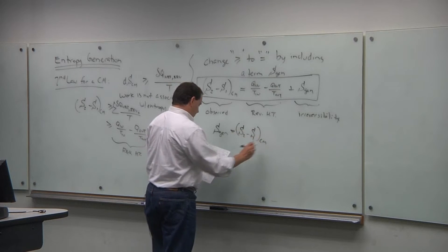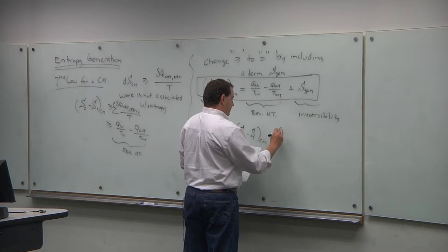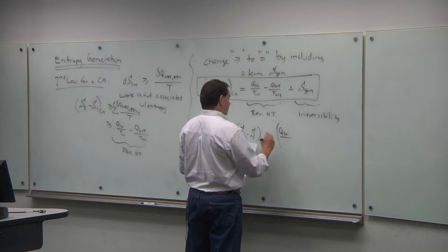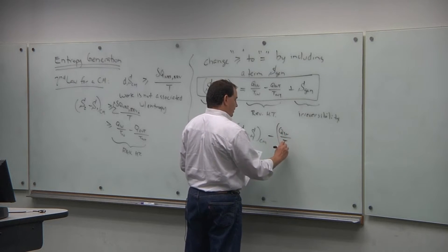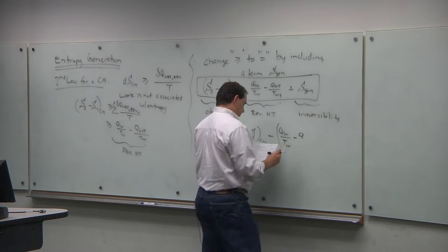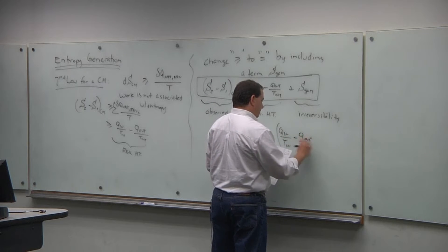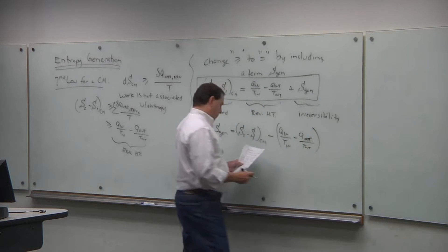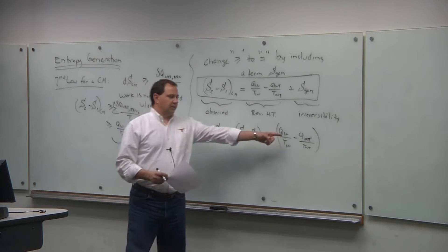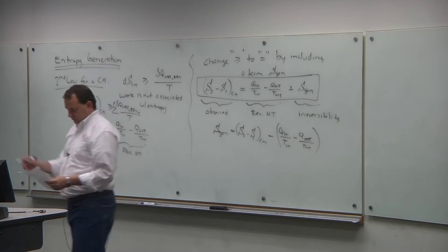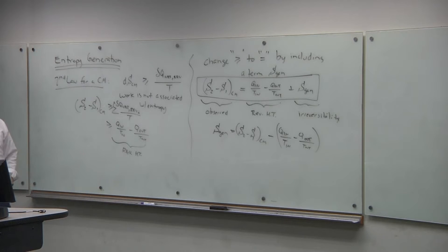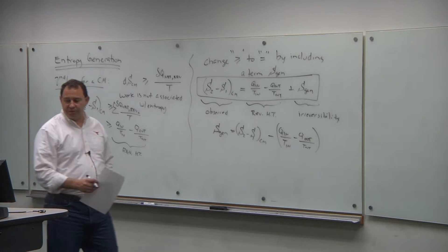You can rearrange to get: entropy generated equals the change in entropy for the control mass, S2 minus S1, minus Q_in over T_in, minus Q_out over T_out. Watch out — you'll have a minus-minus term there. We have the relationship from the second law that the change in entropy is greater than or equal to zero: greater than zero for an isolated system, greater than zero for a closed system.